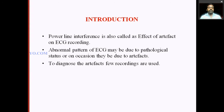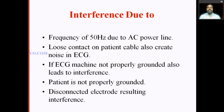To diagnose an artifact, a few recordings are used. Now, interference due to internal interference: the frequency of 50 Hz due to the AC power line. The AC power line operates at 50 Hz, 230 volts. This power line affects the ECG signal.